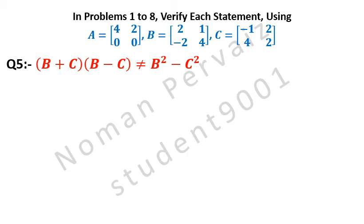And question number 5 is: (B + C) into (B minus C) is not equal to B squared minus C squared. Let's see its solution. Here we are taking the left-hand side of the above equation, as indicated by red color.